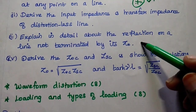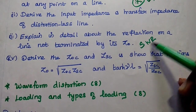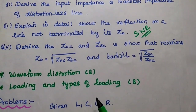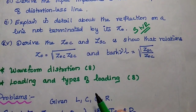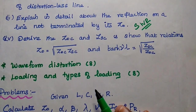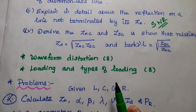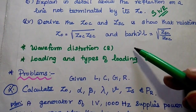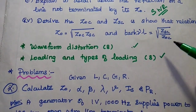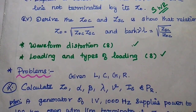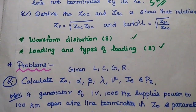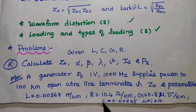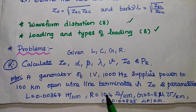Here we can have the concept of standing wave ratio. The next one is to derive the impedance for open circuit line and short circuit line and their relation. Next, waveform distortion and the loading and types of loading — these two are theory questions. We may expect these questions as 7 mark or 8 mark questions. So next are the problems in this first unit.